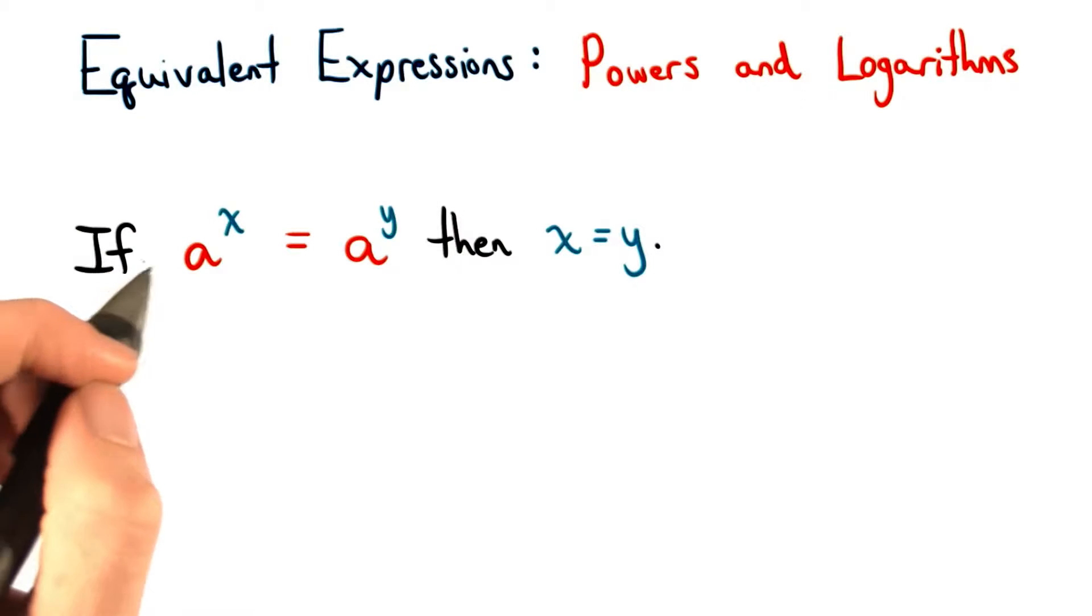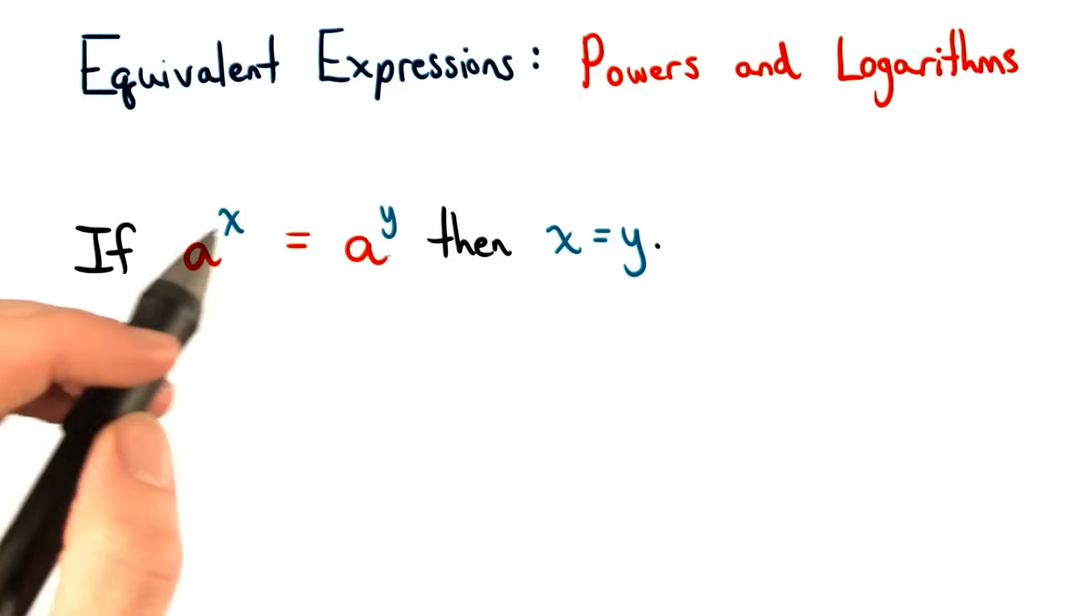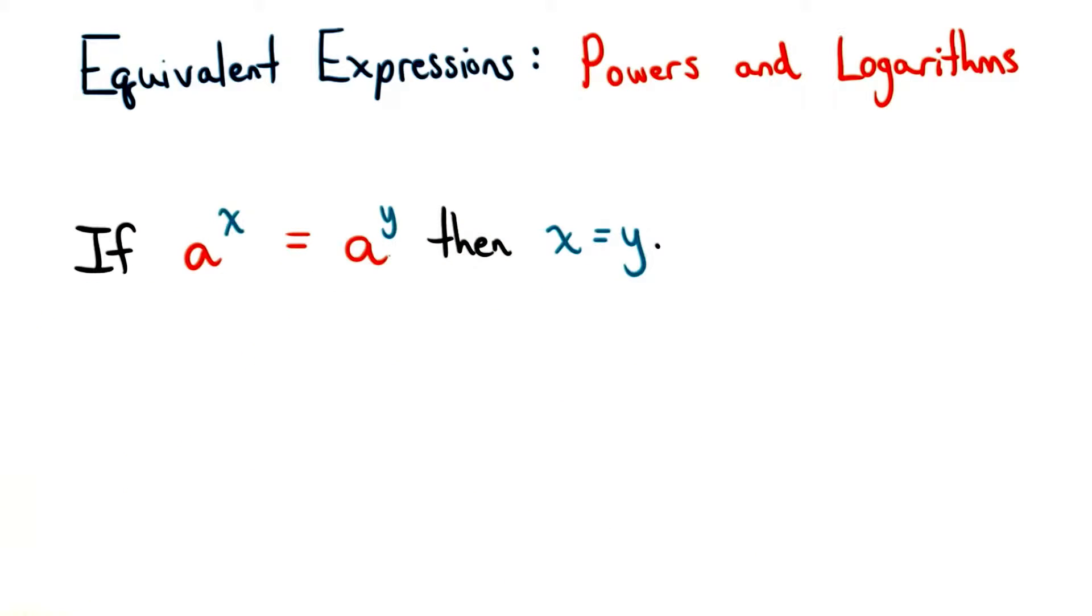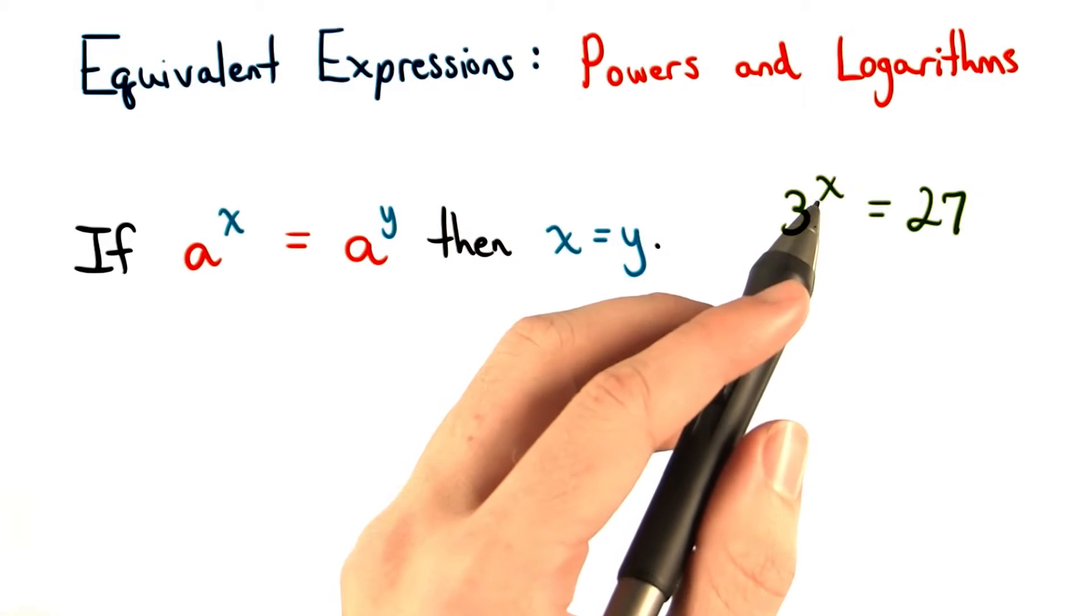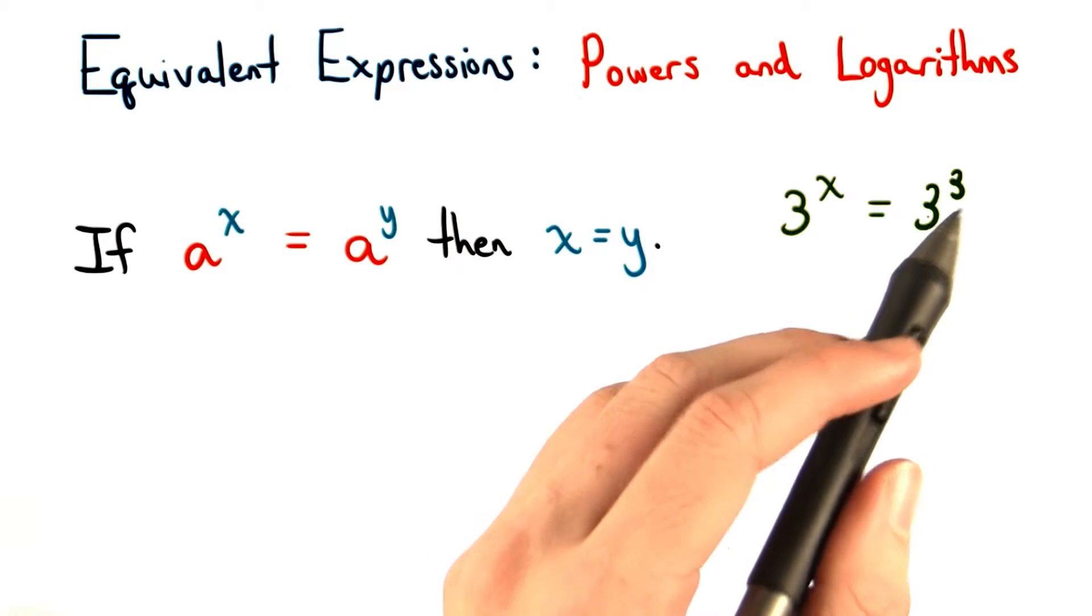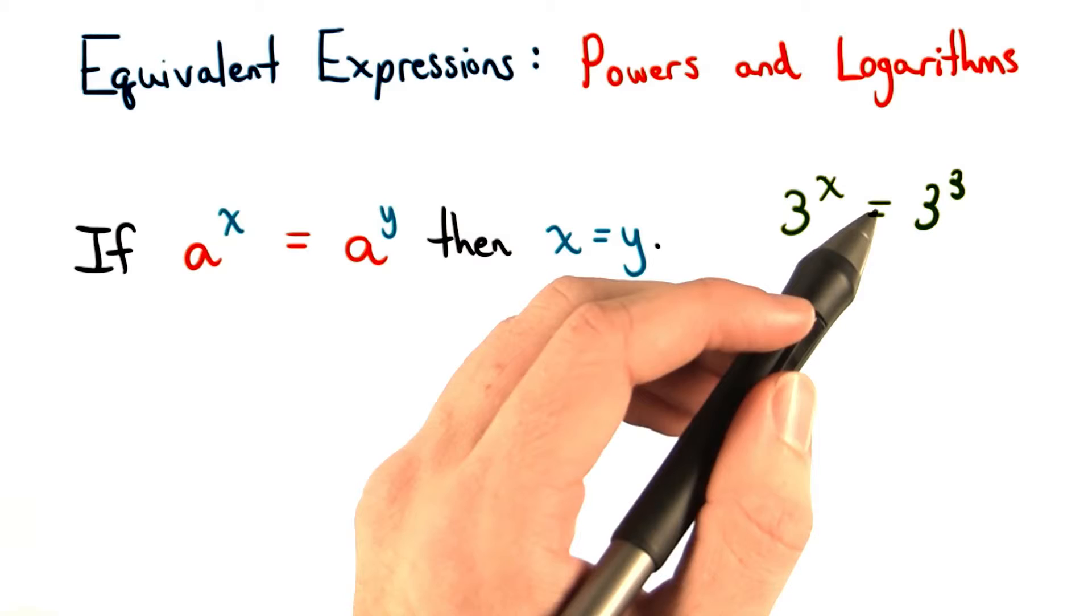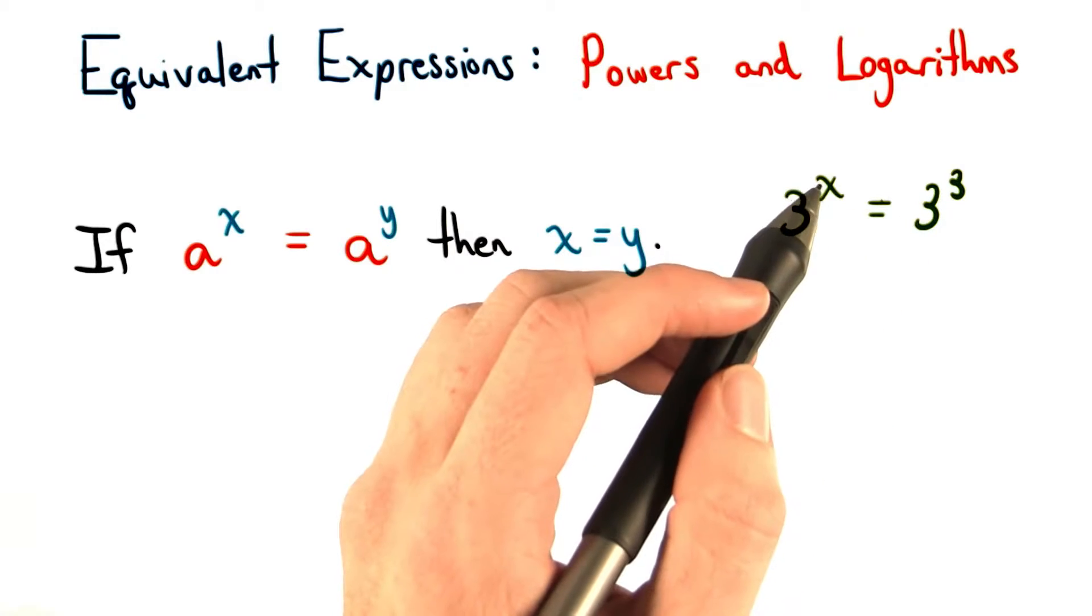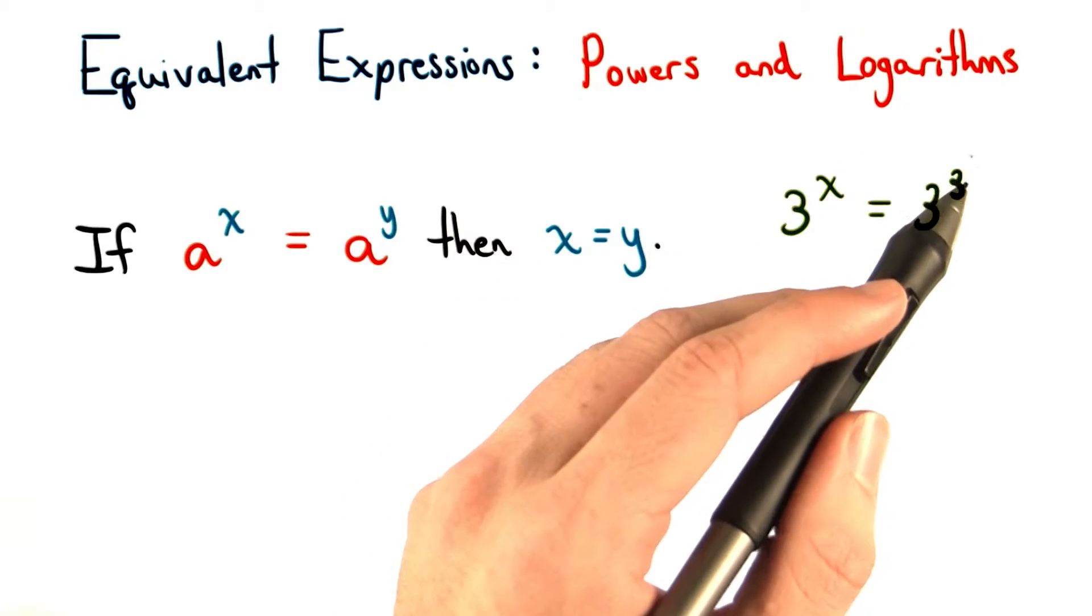The first is that if a^x equals a^y, then we know that x must equal y. We saw this earlier in the problem 3^x equals 27. We rewrote 27 as 3 cubed, and since we have 3^x equal to 3^3, we can set this exponent equal to this one.